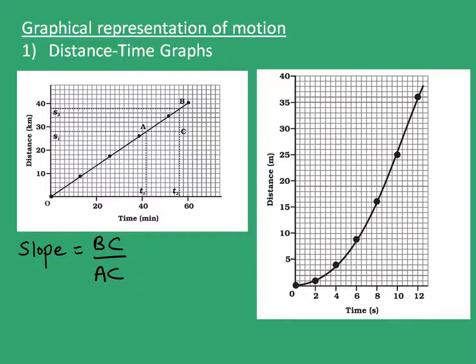We can also find velocity in the second graph. In the second graph, the velocity is found out by finding slopes at different times. We see that velocity is continuously changing as the slope of this graph is continuously changing — in fact it is continuously increasing. Hence the velocity is also continuously increasing.